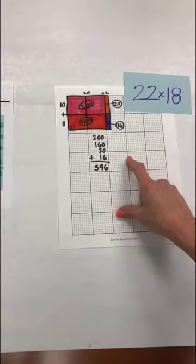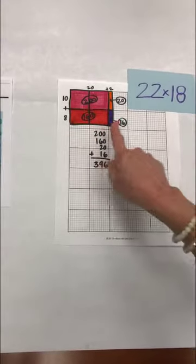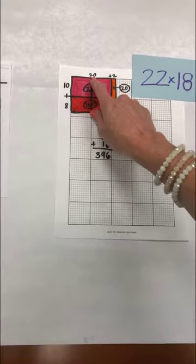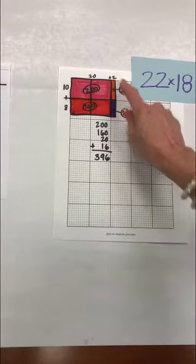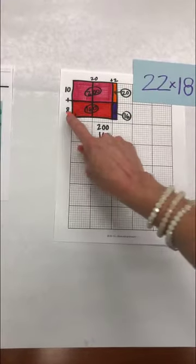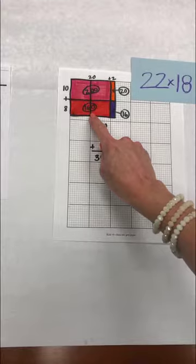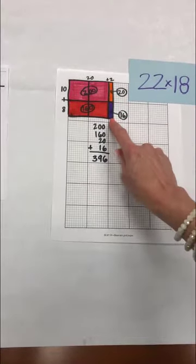So this problem 22 times 18 we're going to show how we're just drawing that rectangular array. We've got 10 groups of 20 which would be 200, 10 times 2 which would be our 20, 8 times 20 which would be 160 and 8 times 2 which would be 16.